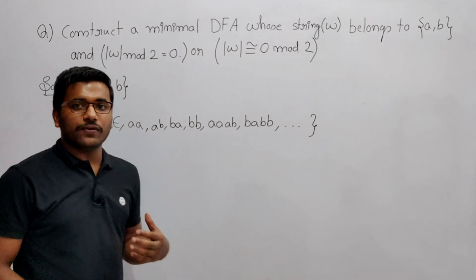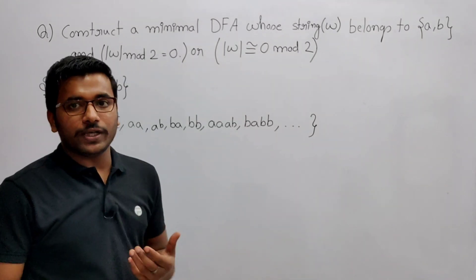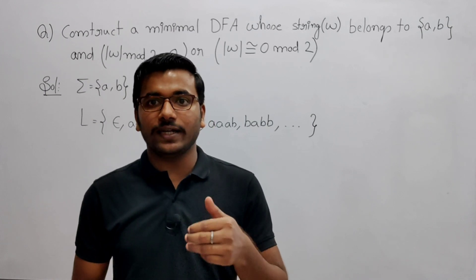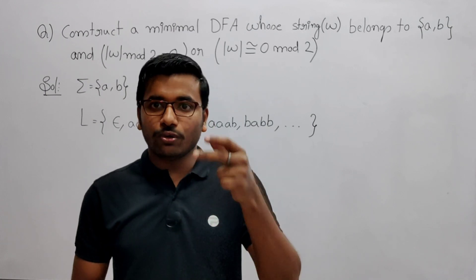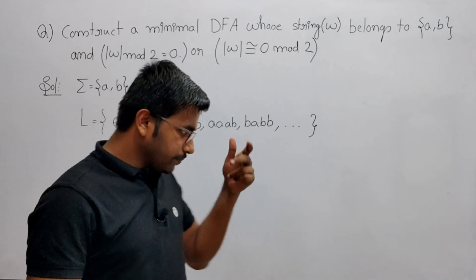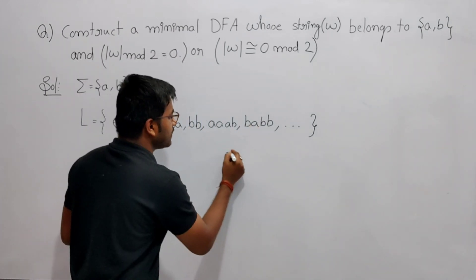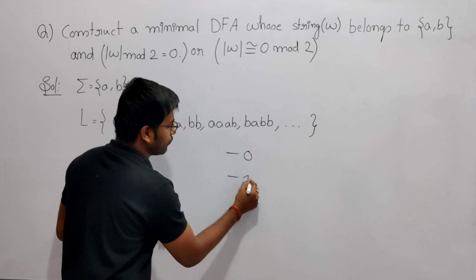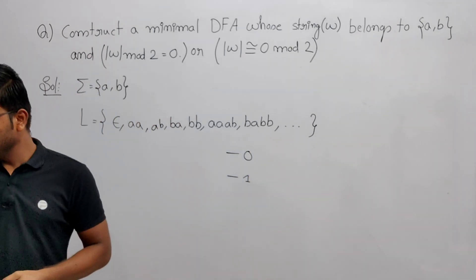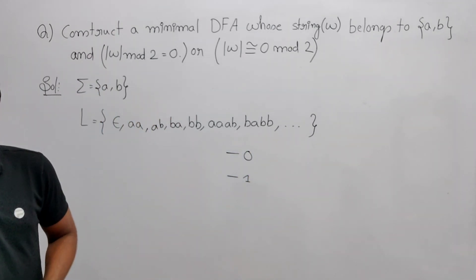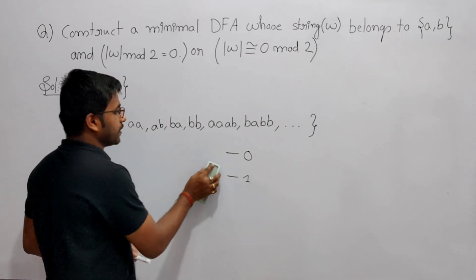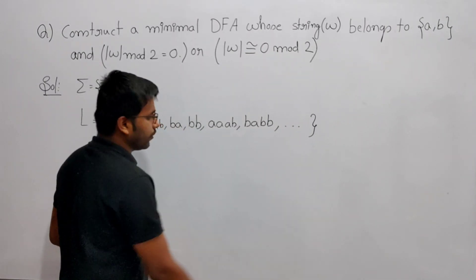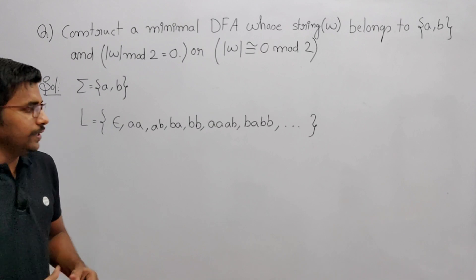Whenever you divide by 2 you are going to get two things: one is remainder 0 and another is remainder 1. So whenever you divide any number by 2 you are going to get two remainders — either 0 or 1. You are not going to get anything else.